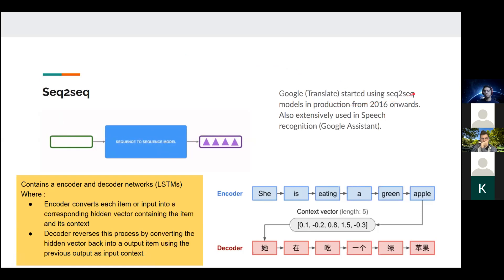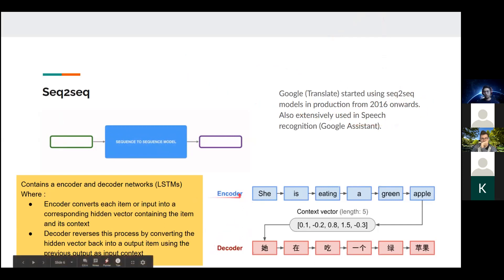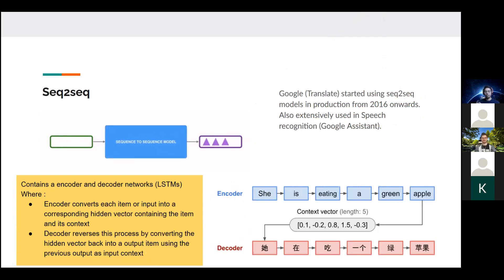Google Translate has been using seq2seq models in production, and Google Assistant is most probably running seq2seq models in the background. In a nutshell, the encoder encodes the source sentence into a fixed-length vector and the decoder remaps that latent vector onto the output target language.